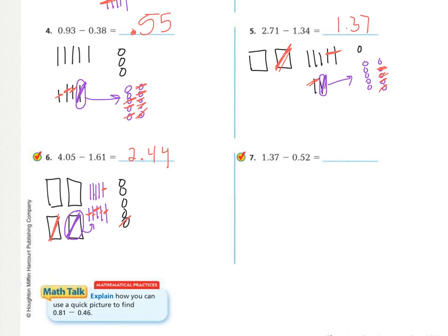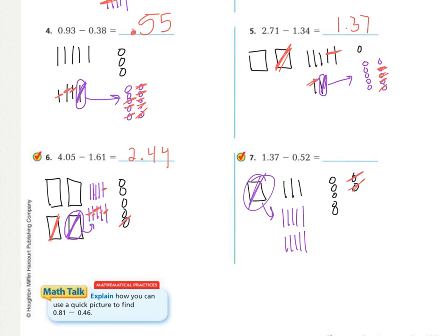For our last one, we have one whole, three tenths, and seven hundredths. We take away two hundredths without regrouping. Then I need to take away five tenths, but I cannot, so I regroup a whole into ten tenths. Now I can take away five tenths — one, two, three, four, five. What is left? Eight tenths and five hundredths.